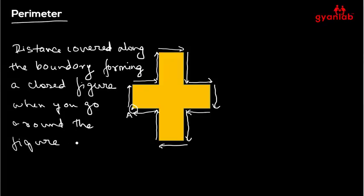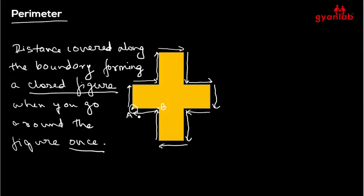Both 'closed figure' and 'once' are important. When we say a closed figure, it means that if I had started from point A and stopped at some point B, that wouldn't define the perimeter of this figure. I have to start from a point and come back to the same point again, forming a closed figure. And I have to go around the figure once — if I travel around twice, that's twice the perimeter, not the perimeter itself.